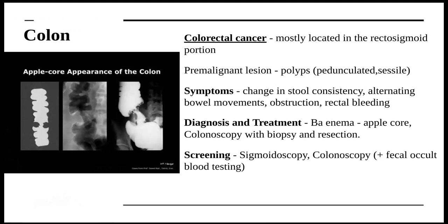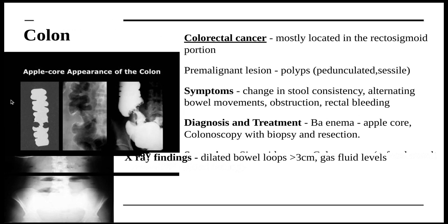Moving on to the colon — colorectal cancer. It is mostly located in the rectosigmoid portion of the colon, and the pre-malignant lesion is polyps. It is usually found by screening methods like sigmoidoscopy or colonoscopy. Symptoms include changes in stool consistency, alternating bowel movements, obstruction, or rectal bleeding. Diagnosis is done by barium enema, which shows an apple core appearance in the colon, as well as colonoscopy with biopsy. It is treated with resection of the tumor.